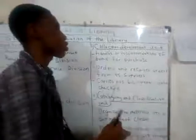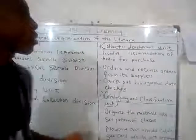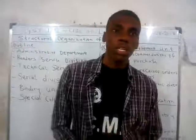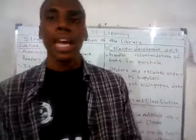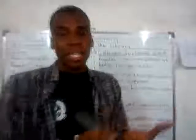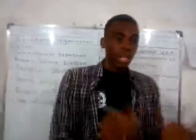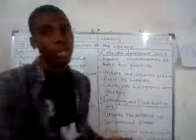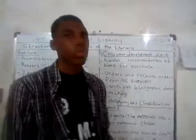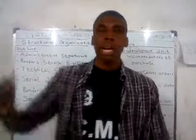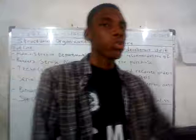One of their functions is to handle recommendations of books for purchase. Library users come to make demands on a daily basis, and when demand is high, these units are in charge of writing down the purchases and demands. When they have written down the demands, they order accordingly, and they also receive orders from the suppliers. The suppliers could be another library or the government.